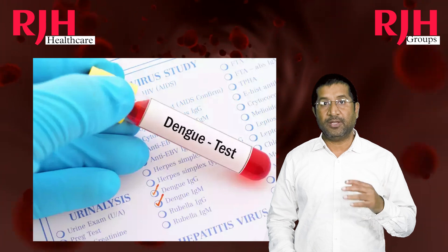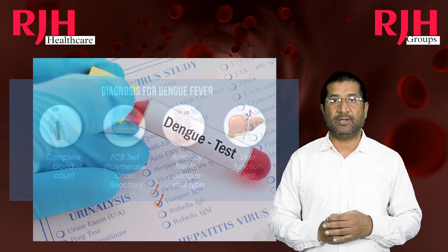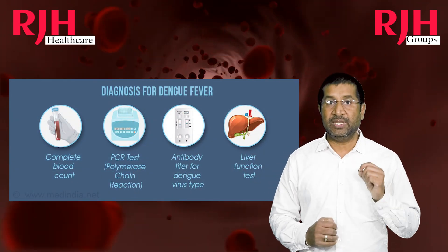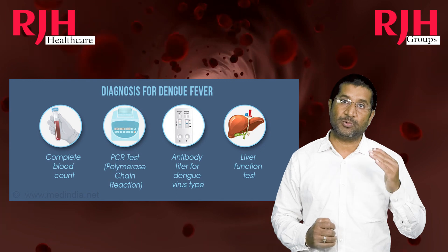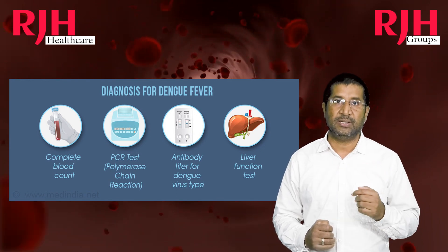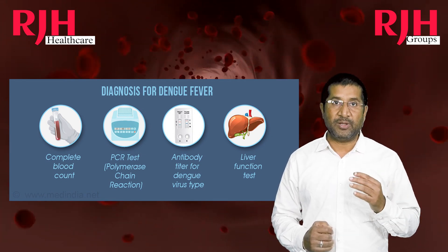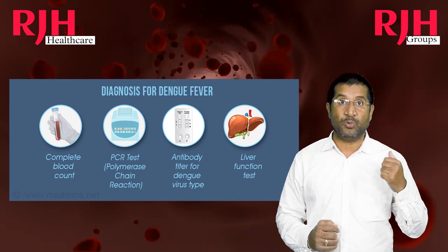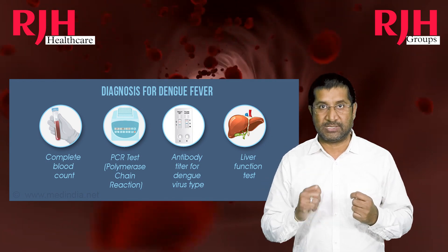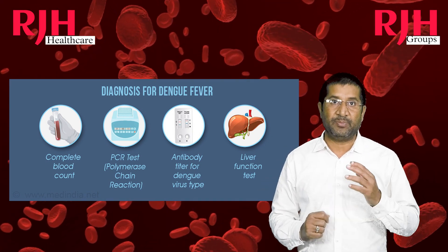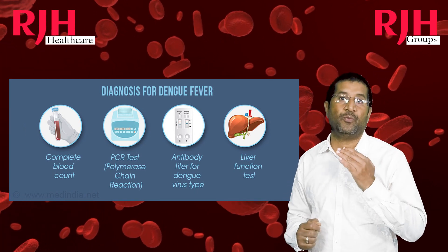Now let's see how we diagnose this disease. Doctors typically perform a combination of clinical evaluation and laboratory tests. Blood tests such as a complete blood count — which includes WBC count, RBC count, and platelets — in particular platelet count and PCV. Dengue antibody tests — please watch my previous video to know how this antibody test is done. And in some cases, a polymerase chain reaction test. These tests can help confirm the presence of the Dengue virus in a person's blood.